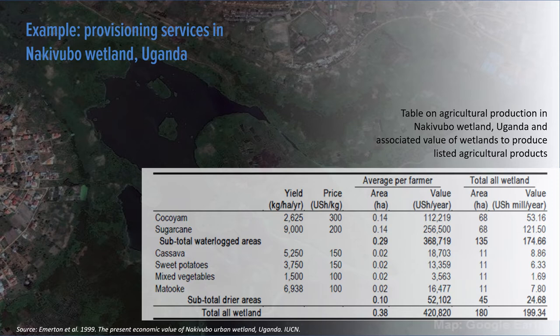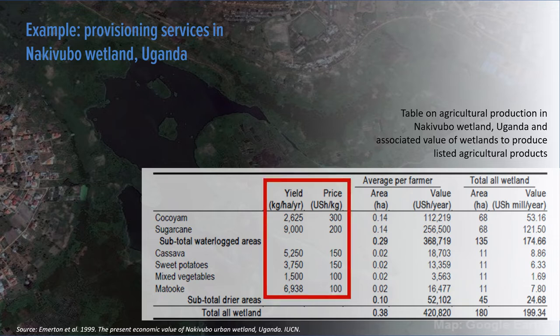For provisioning services, an economic estimation often works well and is relatively easy to estimate from simple economic evaluation. Here is an example from a wetland in Uganda where the market value of different crops are used to estimate total value of the wetland. However, it does not estimate the value of the regulating services or the loss of those services through wetland conversion.